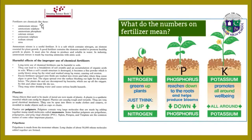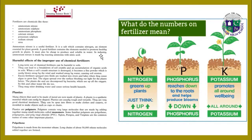Fertilizers are chemicals such as ammonium nitrate, ammonium sulfate, ammonium phosphate, calcium nitrate, potassium sulfate, sodium nitrate, and urea. Ammonium nitrate is a useful fertilizer — it is a salt which contains nitrogen, an element essential for plant growth. A good fertilizer contains the elements needed to promote healthy growth in plants; it must also be cheap to produce and soluble in water. In industry, ammonium nitrate is made by reacting ammonia with nitric acid.